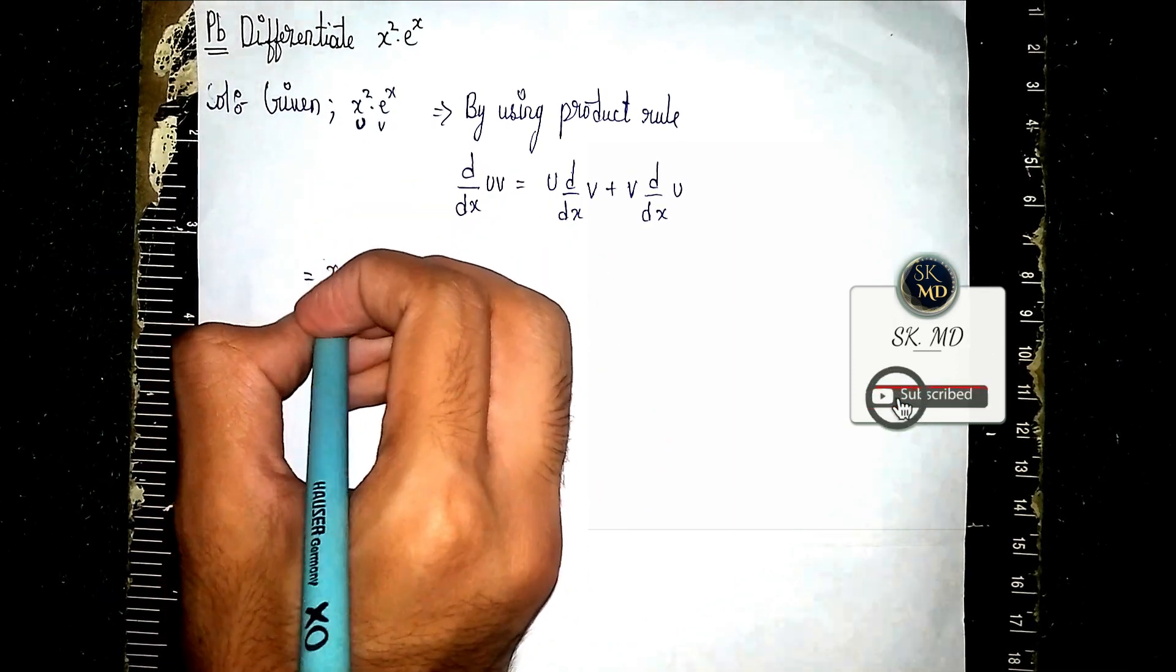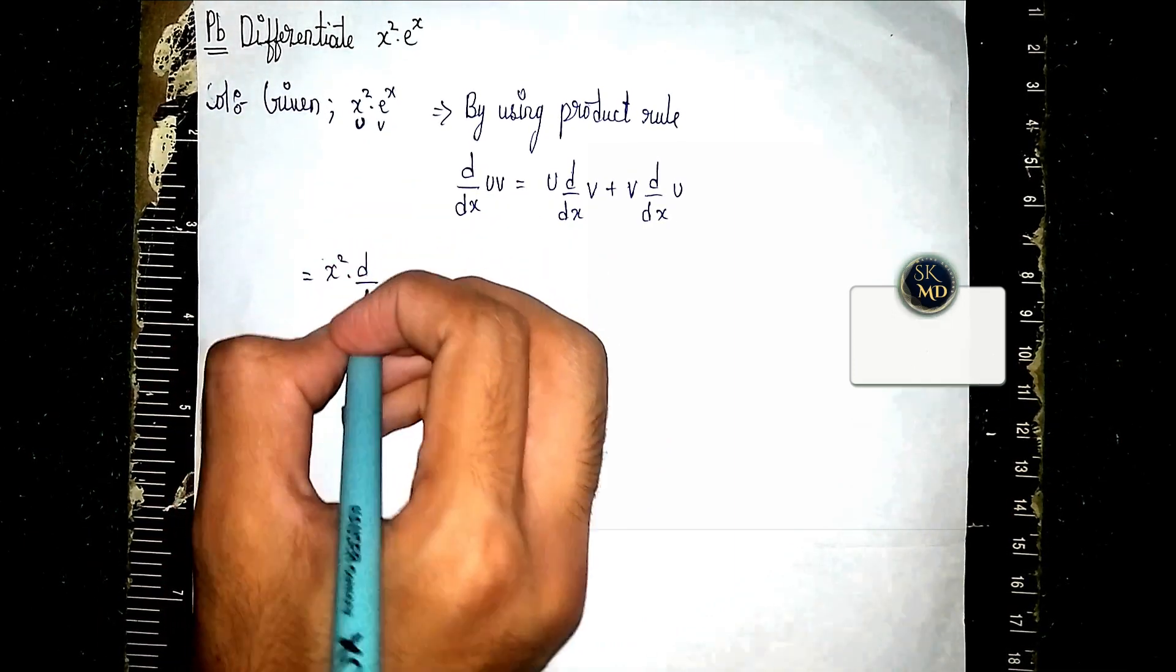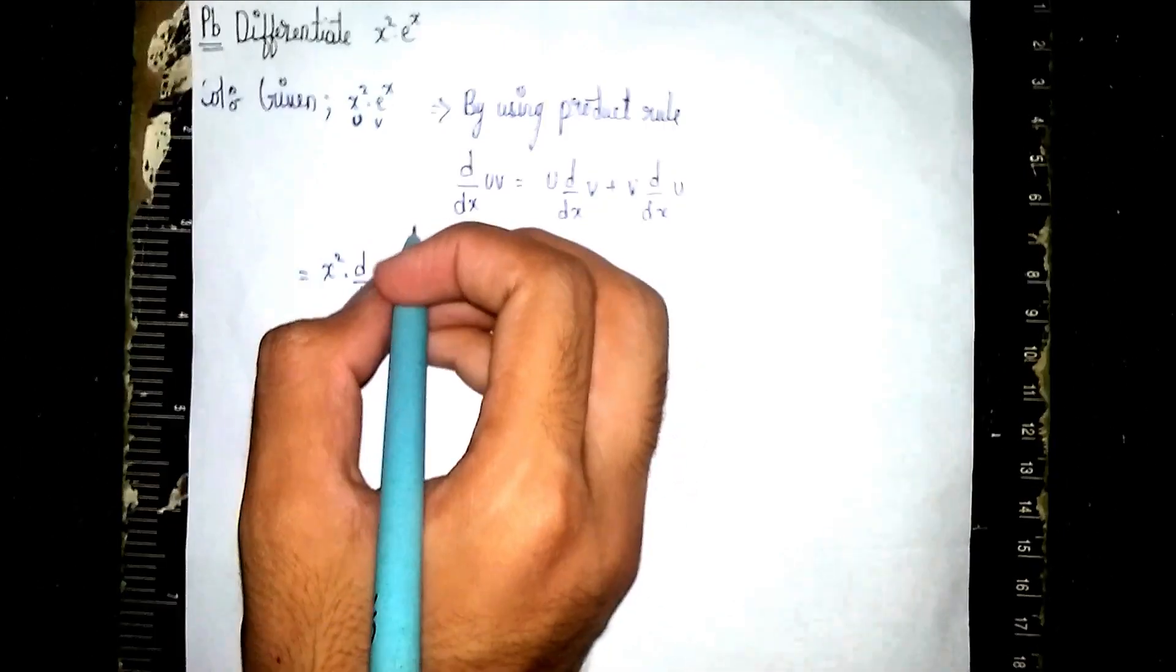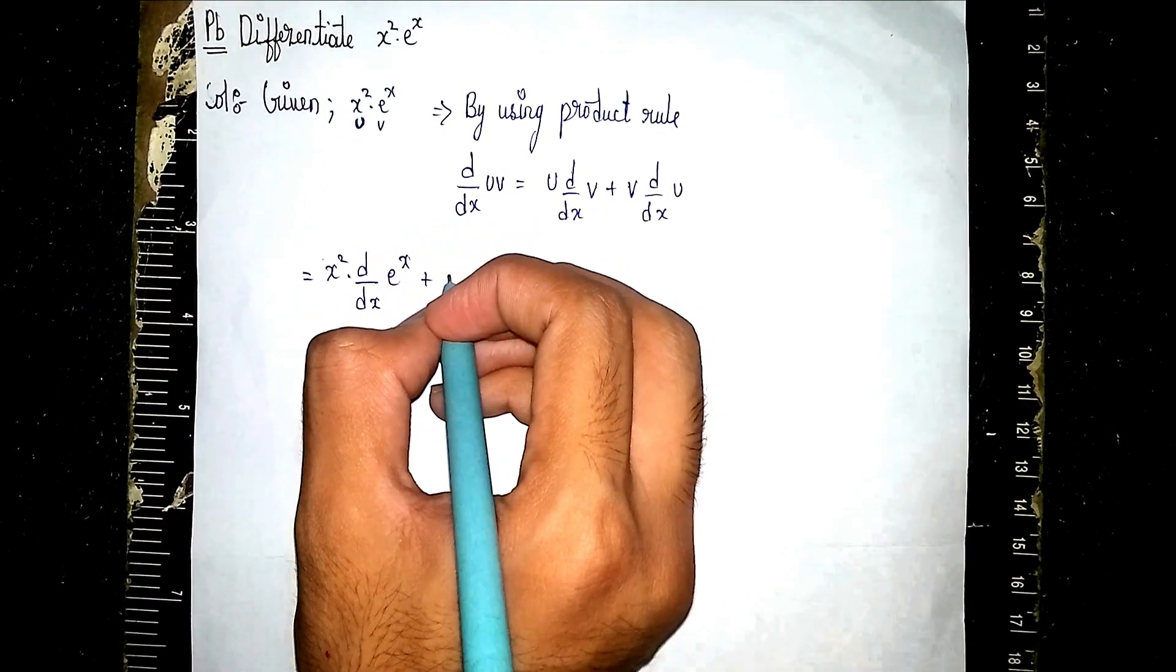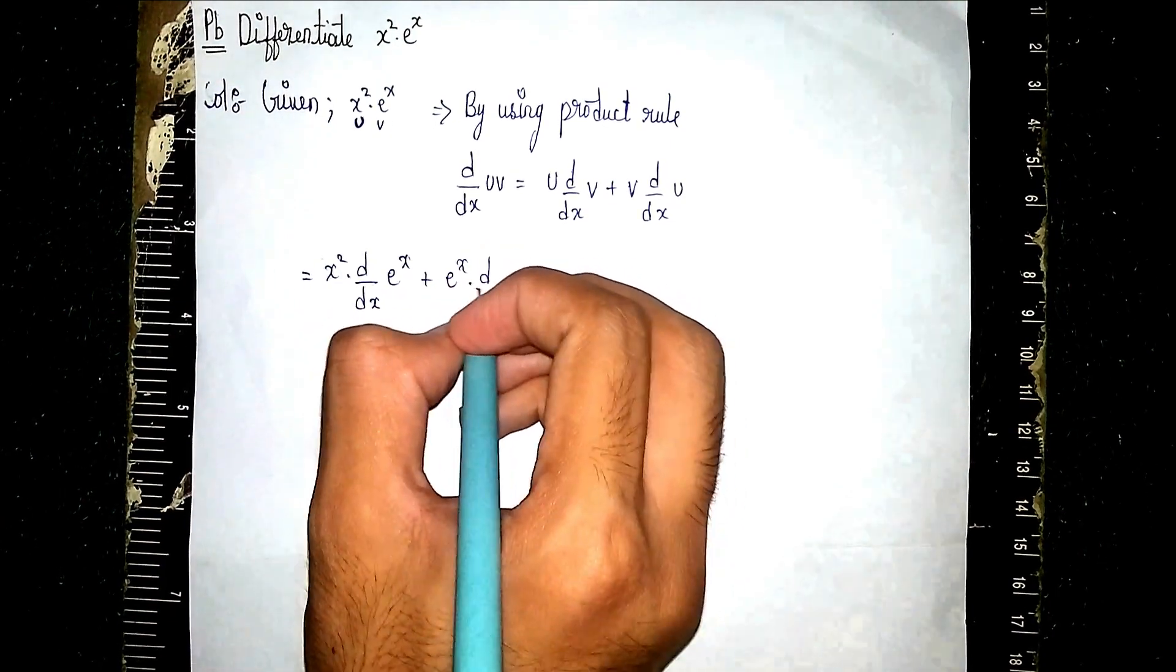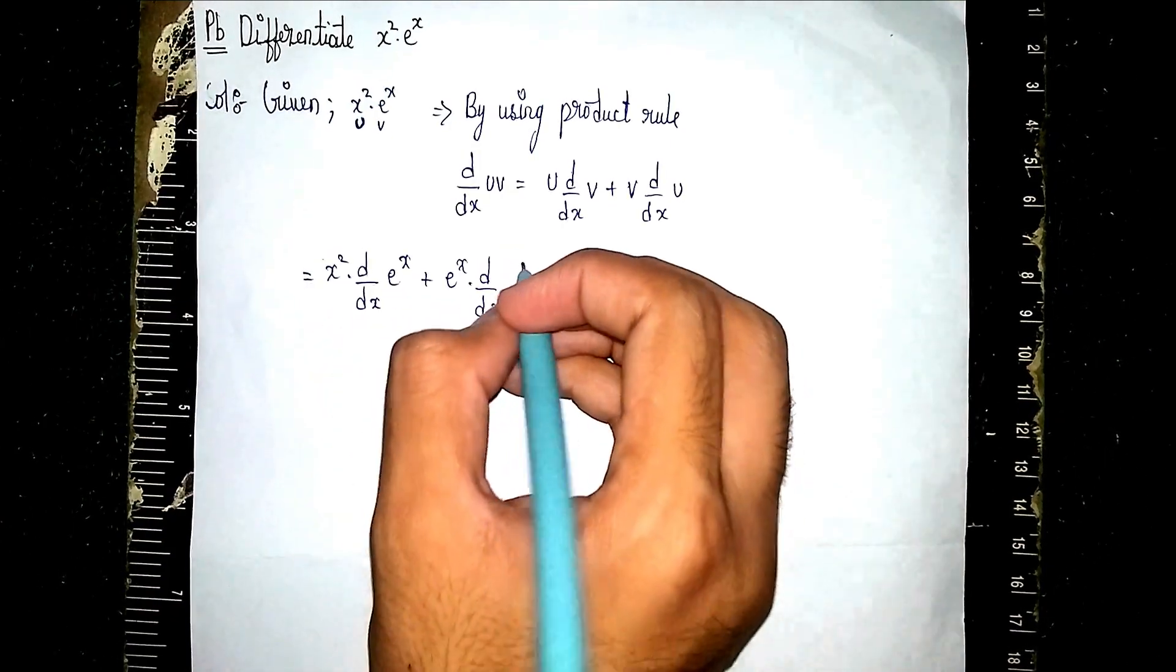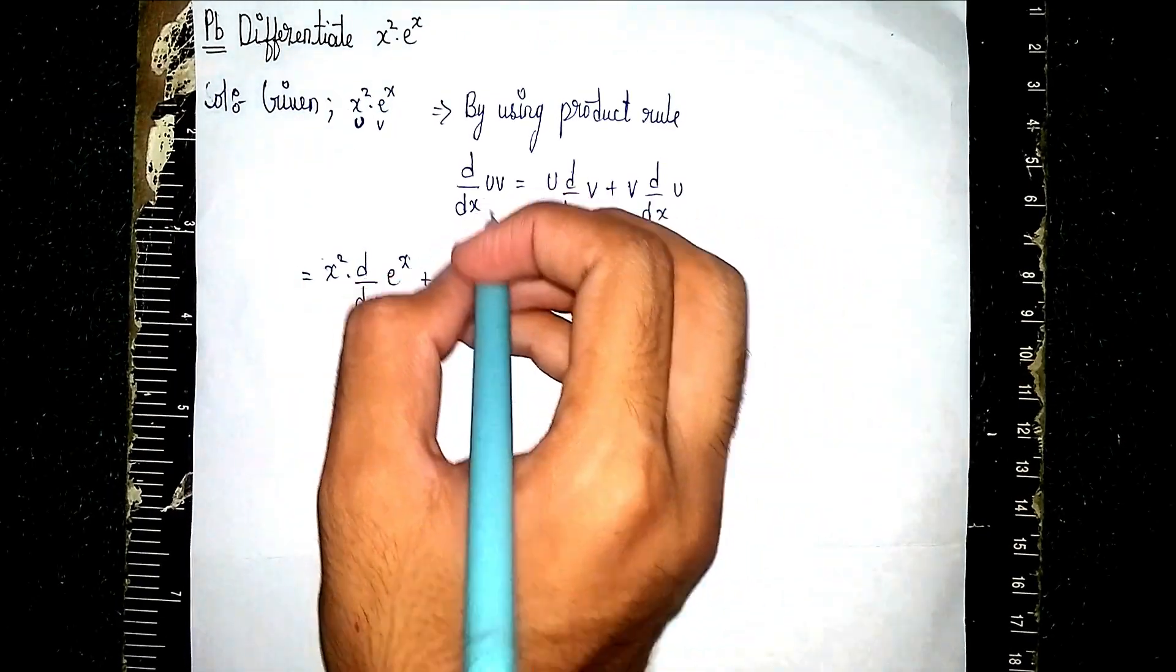So I'm writing here: x² · d/dx(e^x) + e^x · d/dx(x²). Here v is e^x and u is x².